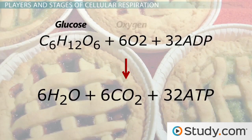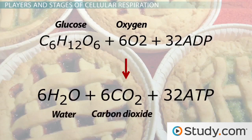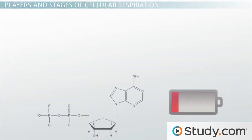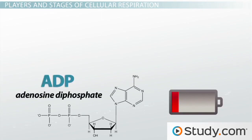O2, or oxygen, of course, is in the air that we breathe. You'll also remember that cellular respiration yields water and carbon dioxide. Carbon dioxide is removed from our bodies with every exhale. Now, let's take a second to review the final reactant in this equation: ADP, or adenosine diphosphate. An ADP molecule has two phosphate groups.